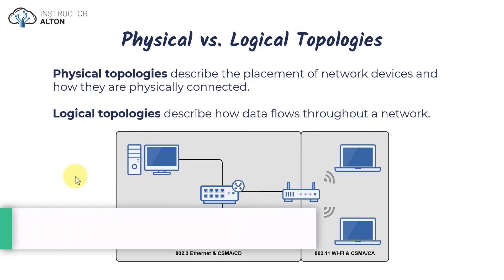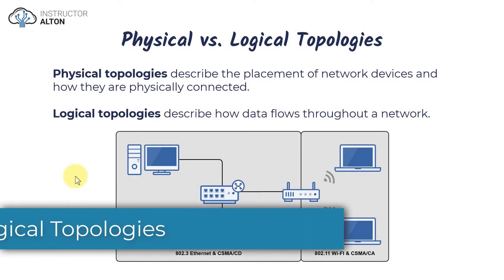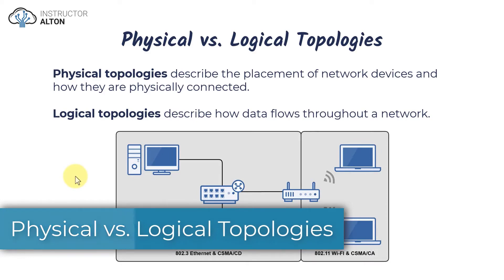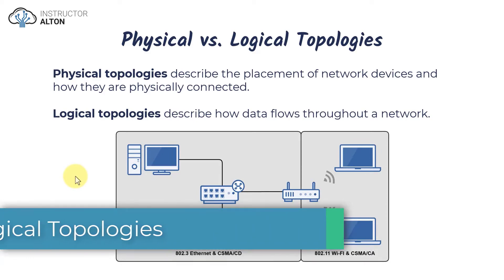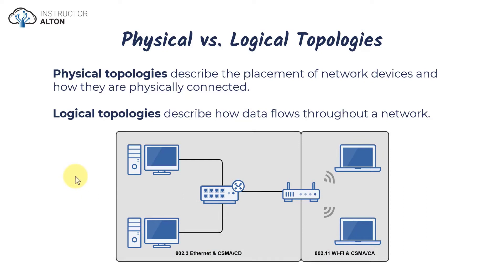In this video, we're going to talk about the difference between a physical and a logical network topology. When we're talking about a topology, think about it as being synonymous with a blueprint. A network is composed of two components: it has a physical component and it has a logical component.